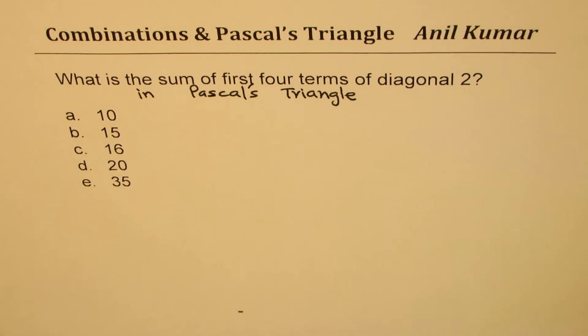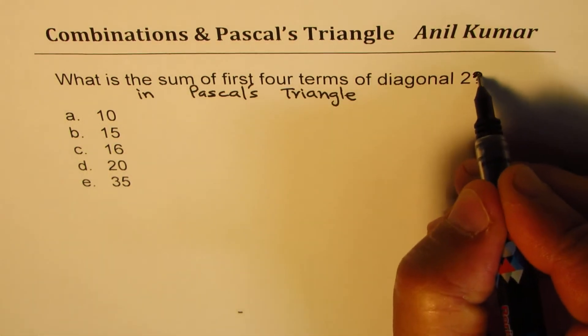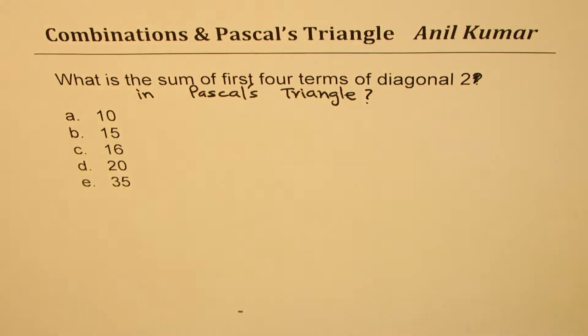So now the question is: what is the sum of first four terms of diagonal two in Pascal's triangle? Perfect. You can pause the video, answer the question, and then look into my suggestions.